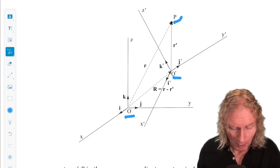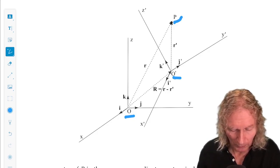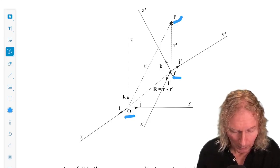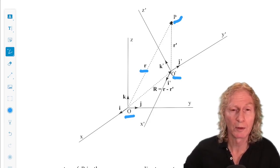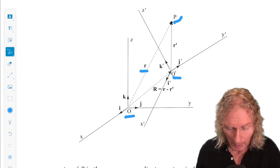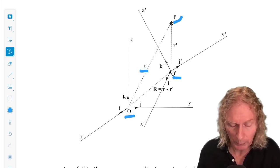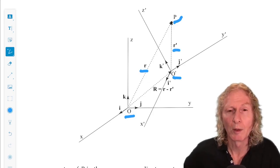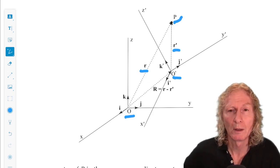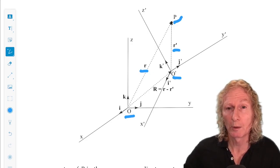Now, observer O, in their coordinate system, they denote the motion of the particle P with a position vector lowercase r. And similarly, in the coordinate system of O prime, the motion of the point P is denoted by R prime in that coordinate system.